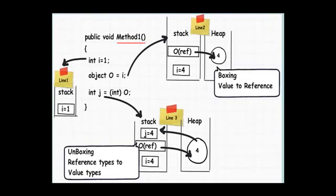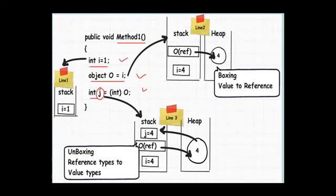Here is a simple method called Method 1. It has three lines of code. In the first line, we are creating an integer data type i and setting it to value 1. In the second line, we are moving this i value to an object data type. Object is the parent object inherited by all .NET components — every .NET object always inherits from the object class. In the third line, we are moving the object value back to an integer data type j.